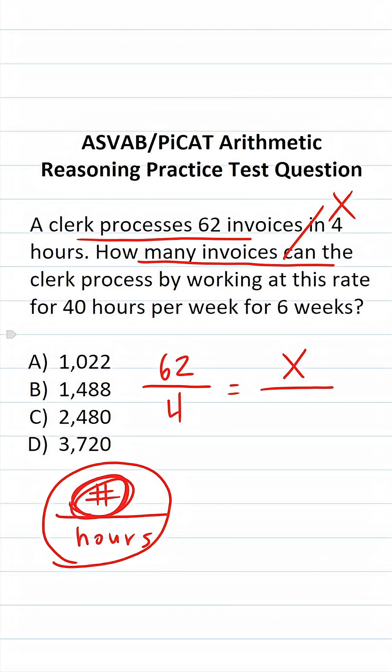Well, how many hours are they working? They're working for 40 hours for 6 weeks. So that's going to be 40 times 6. 6 times 0 is 0. 4 times 6 is 24. So this is going to be 240 hours. And let me go ahead and get this out of the way now.